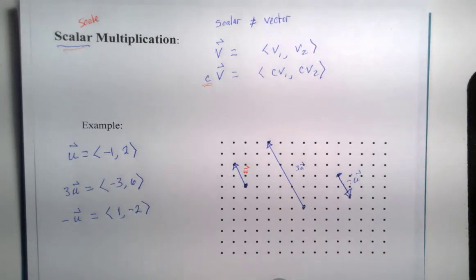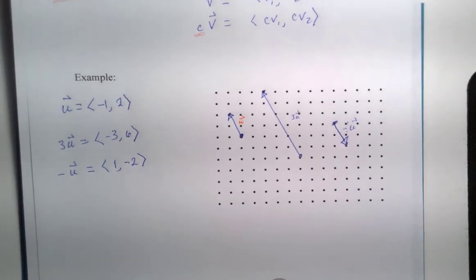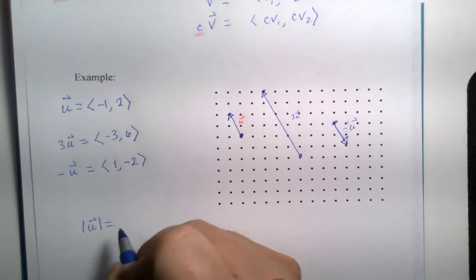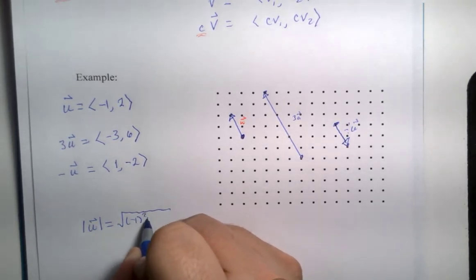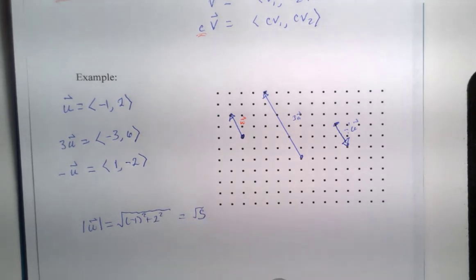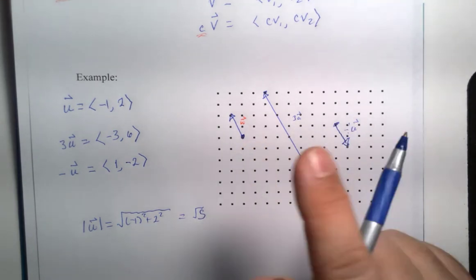Now for those of you that are really quick on the uptake here, I keep talking about magnitude. The magnitude of vector u is the square root of negative one squared plus two squared. That's going to be the square root of five. That's the length of that vector. We could use right triangle to measure it.